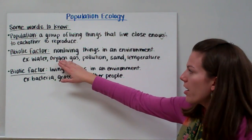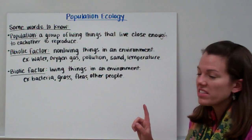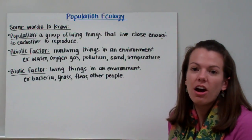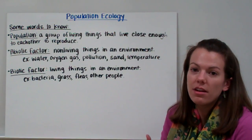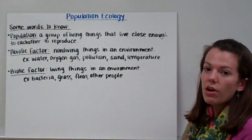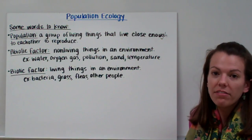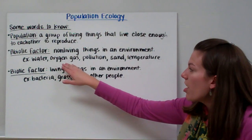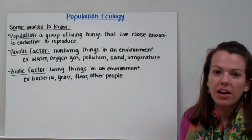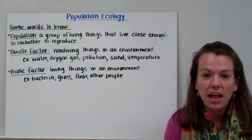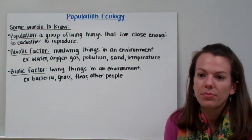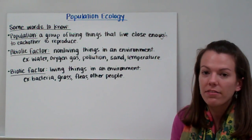Our next word is an abiotic factor. Whenever you see the letter A in front of a phrase, that means 'not.' Biotic means alive, so abiotic means not alive. Abiotic factors are non-living things in an environment. Examples include water, oxygen, gas, pollution, sand, and changing temperature. In a classroom, the light, the desk, or the stone floor would all be abiotic factors.